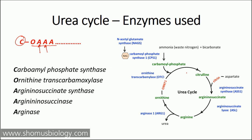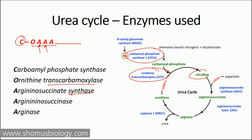Looking at the actual urea cycle diagram: carbamoyl phosphate synthase produces carbamoyl phosphate at the very beginning. Then ornithine transcarbamoylase converts ornithine into citrulline. Arginino succinate synthase converts citrulline into arginino succinate by adding aspartate to it. Arginino succinase (arginino succinate lyase) converts arginino succinate into arginine. Finally, argininase converts arginine back into ornithine, so the cycle keeps continuing.